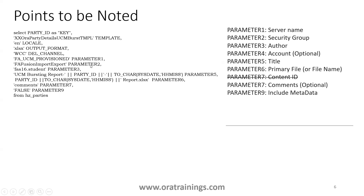For the delivery channel, you must mention exactly the same names as per Oracle's documentation. The delivery channel is WCC. Parameter one is FA_UCM_PROVISIONING, and parameter two is FA_FUSION_IMPORT_EXPORT. Parameter three is the order of the report. Parameter five is the title of your report. Parameter six is the file name — the name you see when downloading the file.